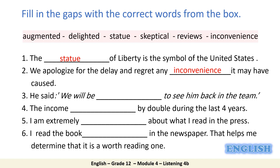Number three: he said we will be ___ to see him back in the team. We will be pleased or overjoyed, so the answer is delighted. Number four: the income ___ by double during the last four years. We can say the income increased or augmented by double during the last four years. Number five: I am extremely ___ about what I read in the press. We cannot always believe what we read in the press, so the answer is skeptical.